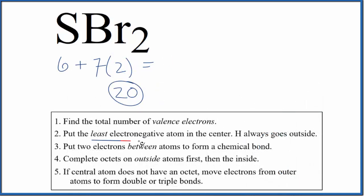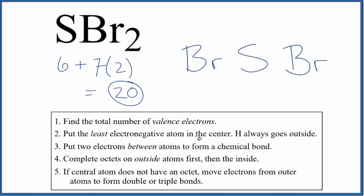We put the least electronegative atom at the center of our Lewis structure — that's the Sulfur. So we'll put Sulfur here, and then on either side we'll put a bromine. Next, we're going to put a pair of electrons between atoms to form the chemical bonds. So we put two here and here — those are our chemical bonds. We've used four electrons.